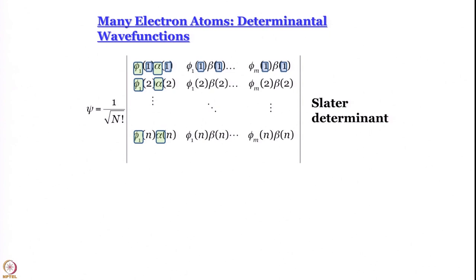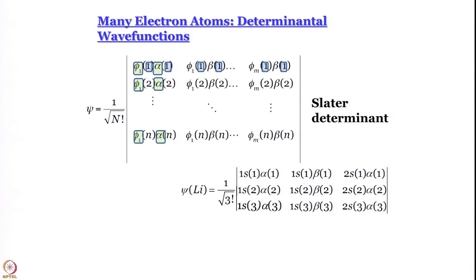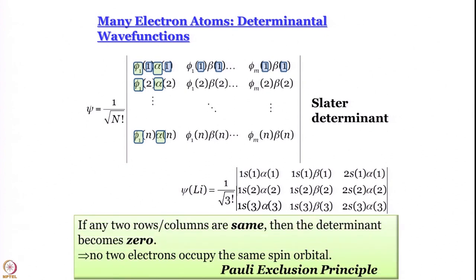This is how we write Slater determinants. Let us show one example for lithium, which has 3 electrons: the determinant includes 1s_1_alpha_1, 1s_1_beta_1, 2s_1_alpha_1 in the first row; 1s_2_alpha_2 and so on; and the third row is for electron number 3. As homework: first, is this wave function normalizable? Second, is it complete, or do I need some other term? As a matter of convention I used alpha first, but is beta not equally probable - how do I incorporate that? Is there a need to incorporate it? I would like you to work these out by yourselves.